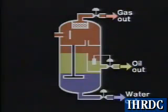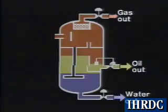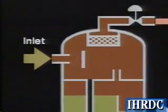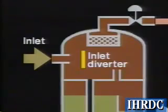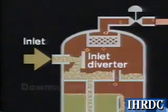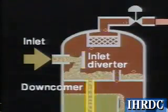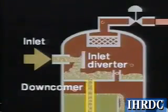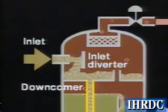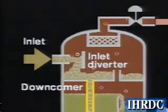Here we see a typical configuration for a vertical three-phase separator. The flow stream enters the vessel through the side, as in the horizontal separator, and once again the inlet diverter separates the bulk of the gas. A downcomer is required to transmit the liquid through the oil-gas interface so as not to disturb the oil skimming action taking place.